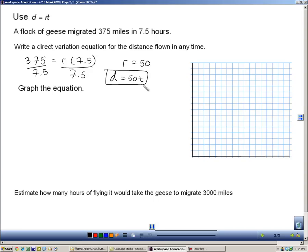The distance is 50 times however many hours they travel. Now, I'm going to graph this direct variation. If you remember from previous slides, all direct variations go through the origin, so we know there's going to be a point here. The other point that I have is this one, 375 and 7.5, so I'm going to graph that.